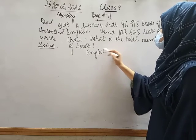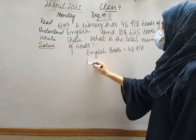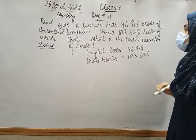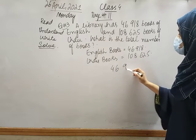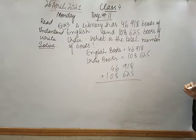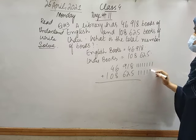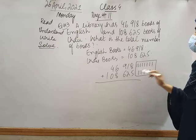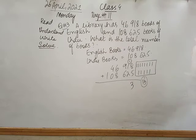English books: 46,918. Urdu books: 108,625. Now we have to add according to the statement. So 46,918 plus 108,625. I will add one by one. 8 plus 5 is 13 — two digit number, so I write 3 at unit place and carry 1. Next is 1 plus 1 plus 2 is 4. Moving to the next: 9 plus 6 is 15 — write 5 and carry 1. Next: 6 plus 7 plus 1 carry is 14 — two digit number.